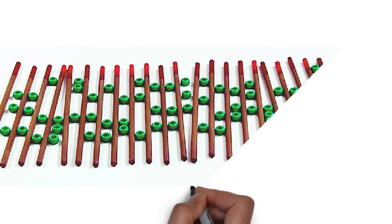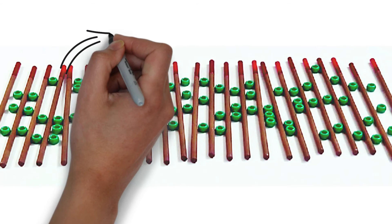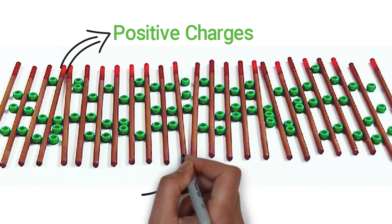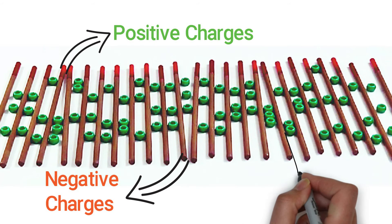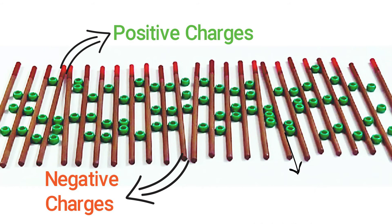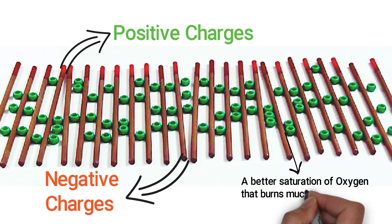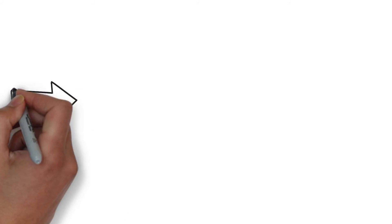What does this mean? Here we have an example of hydrocarbons that have been exposed to the Green Genius. The hydrocarbons have been organized with the positive charges on one plane and the negative on the other. Additionally, the molecules have been evenly spaced. This allows oxygen atoms to be strategically placed between the hydrocarbons, allowing a better saturation of oxygen that burns much more thoroughly, completely, and efficiently in your engine.